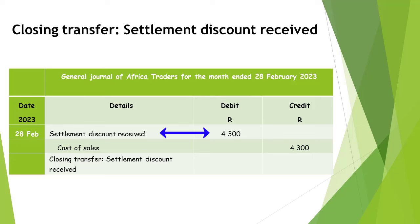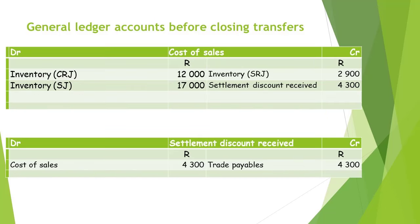The settlement discount received account will be debited with 4,300 rand, and the balance is transferred to the cost of sales account, which means the cost of sales account will be credited with 4,300 rand. The settlement discount received account now has a zero balance.